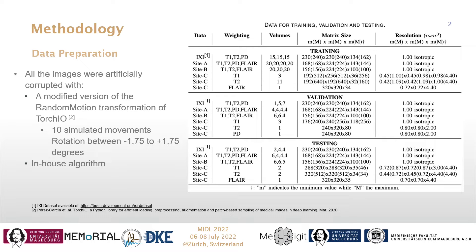All except Site C data were resampled to a 1 mm isotropic resolution. The more detailed structure of the dataset can be seen on the right side. The images of this dataset were artificially corrupted using a modified version of the random motion transformation of Torch.io and a custom corruption method developed in-house, which randomly manipulates the phase encoding lines of k-space to introduce motion.